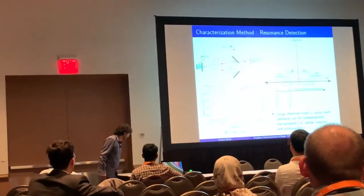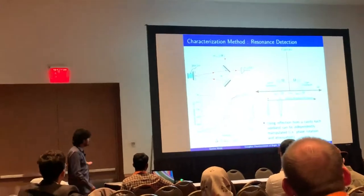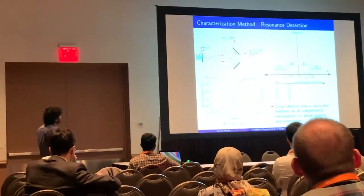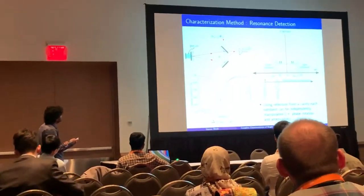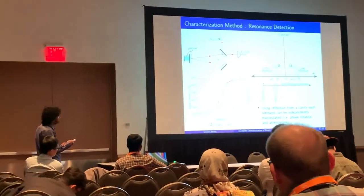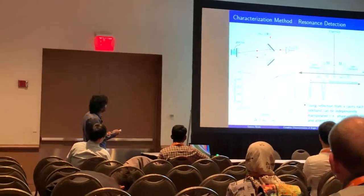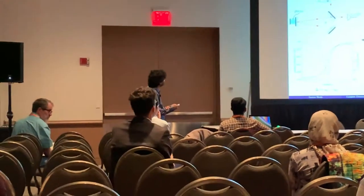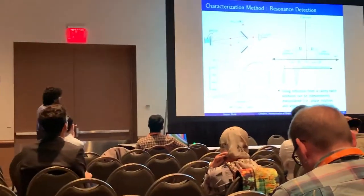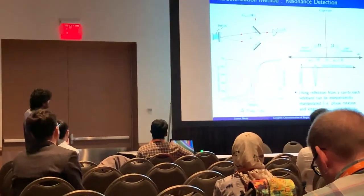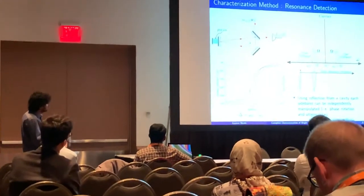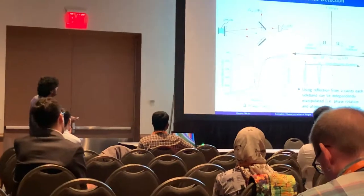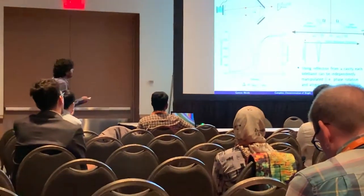In order to compensate for that, you can use a method which is frequency dependent. You take your state along with the carrier — including the local oscillator — and shine it on a cavity, looking at the reflected power. If you construct the cavity with a narrow enough resonance and scan it using a piezo, you can tune this resonance to one of the sidebands and independently manipulate them.